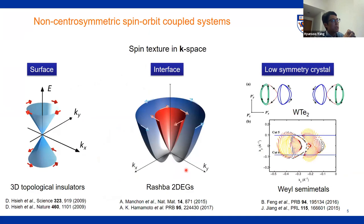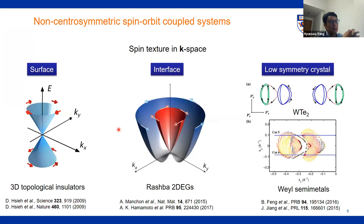One of the best material candidates for nonlinear spintronics is noncentrosymmetric material systems. A typical example for generating interesting spin texture in k-space comes from the surface of a 3D topological insulator. We can also create spin population from the interface, such as Rashba systems like a two-dimensional electron gas. The last example is low-dimensional systems with low-symmetry crystals, like tungsten ditelluride — one of the prototypical systems in Weyl semimetals.